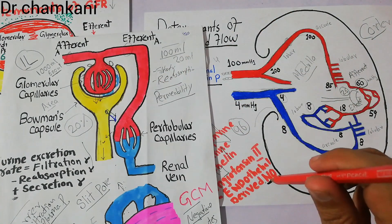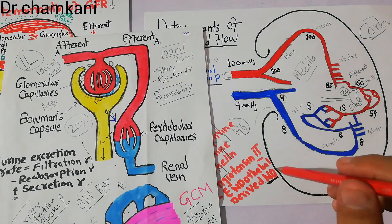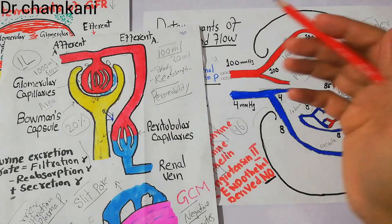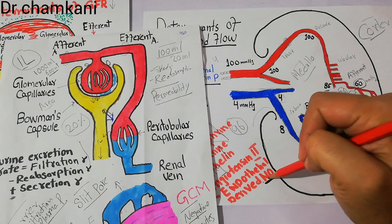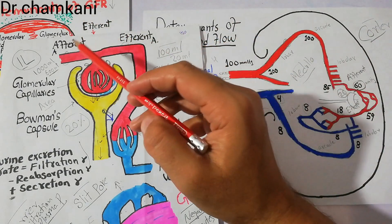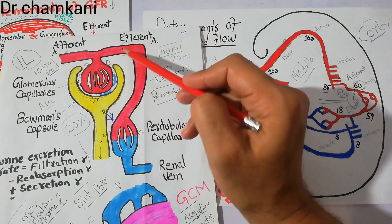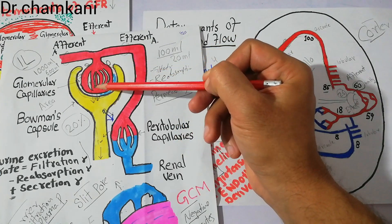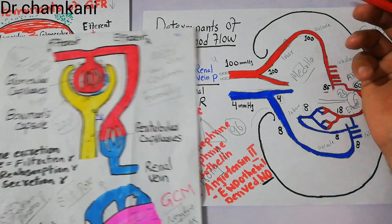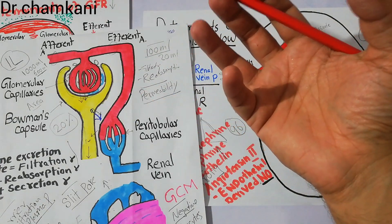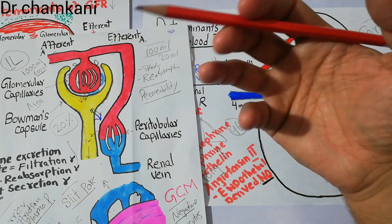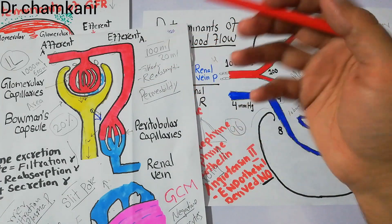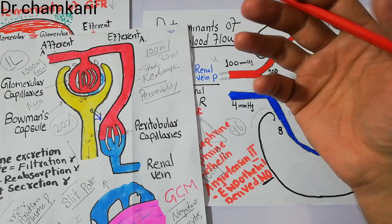If the secretion of nitric oxide gets disturbed or its action is blocked — for example, by drugs which stop the action of nitric oxide — it leads to constriction of the afferent and efferent arterioles, and the normal excretion of sodium and water through filtration decreases. As a result, sodium and water remain in the body, and due to this increased amount, blood pressure increases and patients become hypertensive.